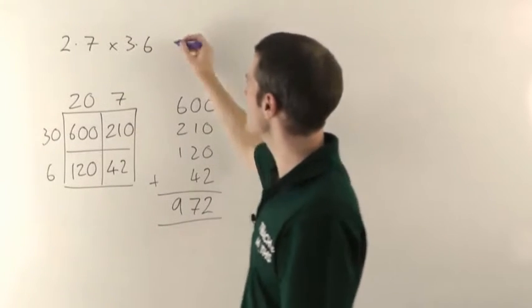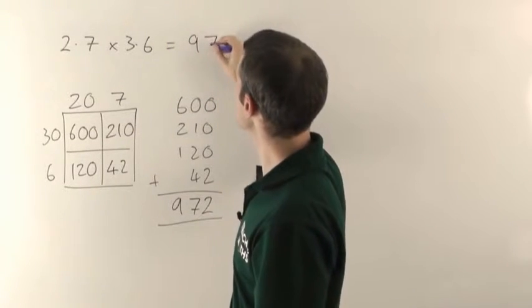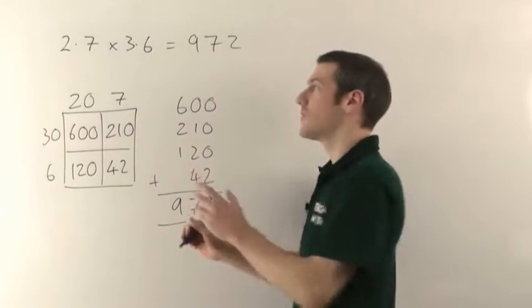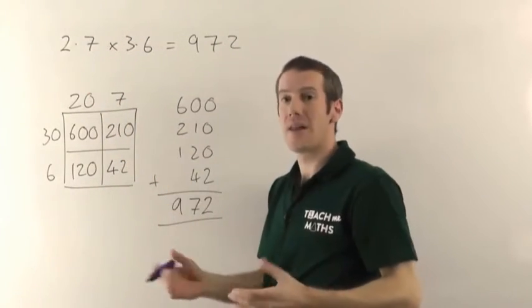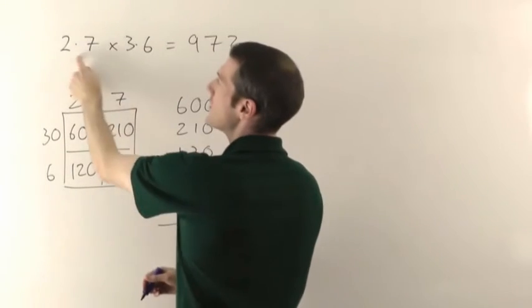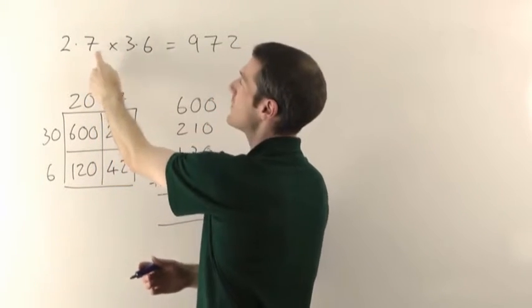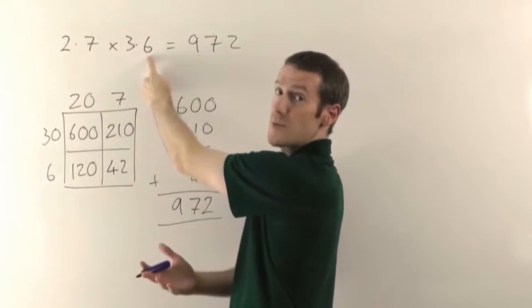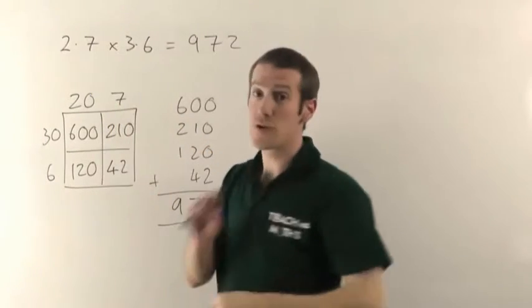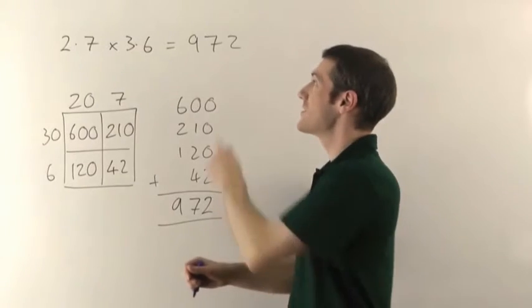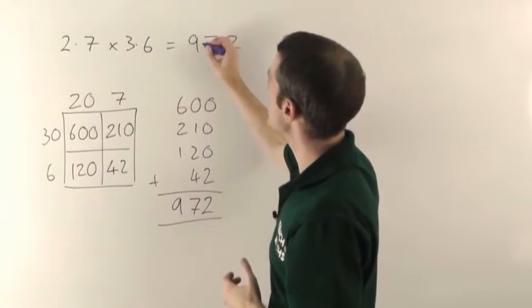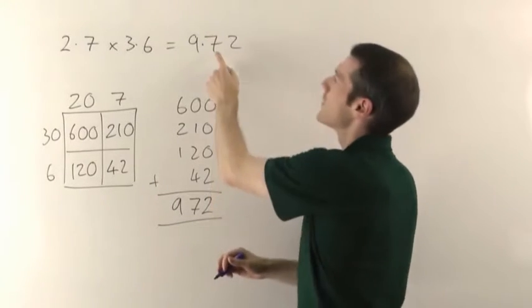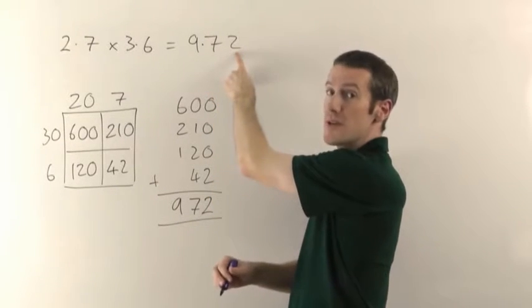So 27 times 36 will give you 972. And then all you've got to figure out is where to put the decimal points. Now what you look for is where the decimal points are in the question. How many decimal places are there altogether? Now this number has got one decimal place, it's the 7. This number's got one decimal place as well. So altogether you've got two decimal places. And that means you need to have two decimal places in the answer as well. So in this case, we have to put our decimal point there, because now I've got one, two decimal places.